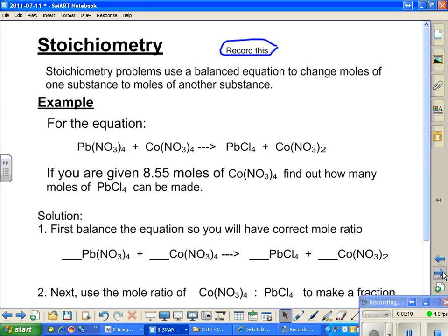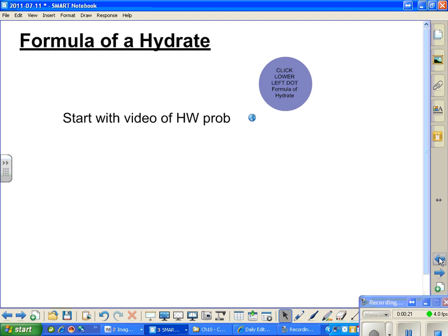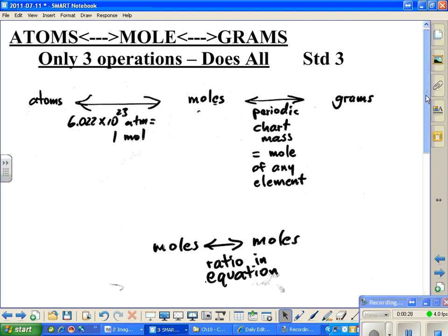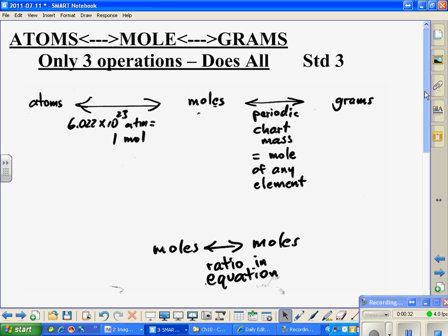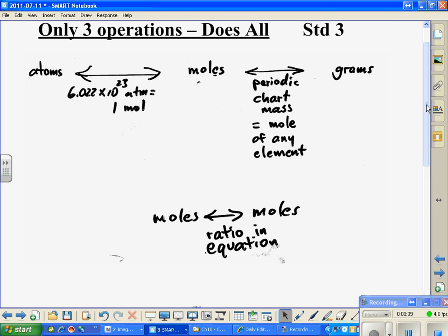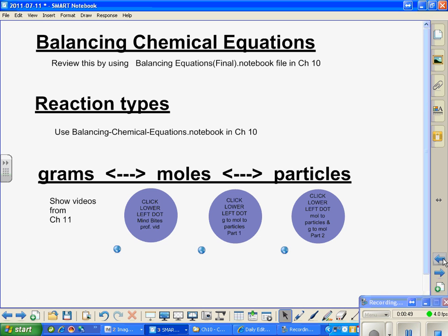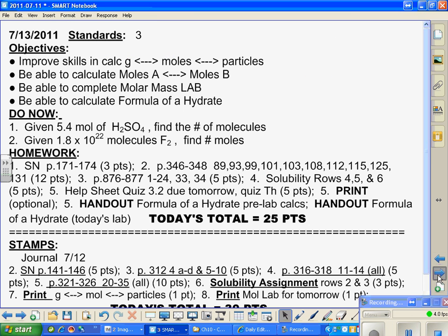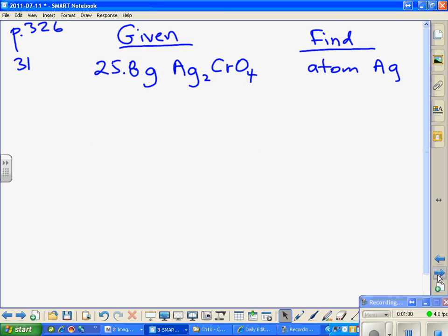Let's go back to this little summary. Have you all looked at this? You've all printed it, have you looked at it? I know about printing and looking, two different things. Alright, this summarizes everything we're going to do. We are starting in this problem where? What are we giving? Yes, we're giving grams of silver chromate.